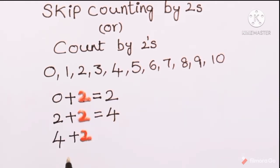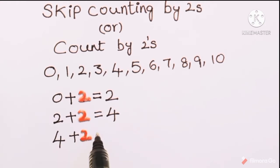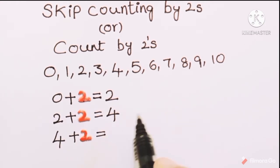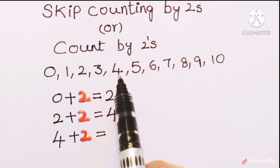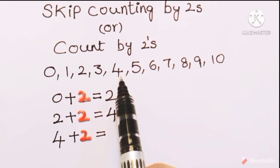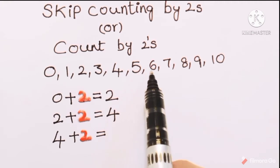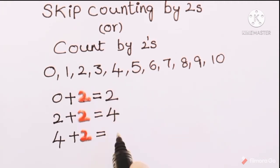Now 4 comes as the previous number. If we again add 2 to the previous number 4, how much do we get? Just count 2 numbers from 4: 1, 2. So the addition of 2 to the number 4 gives 6. 4 plus 2 is 6.